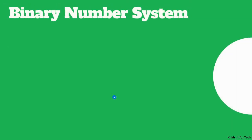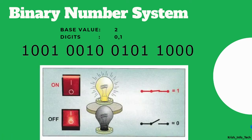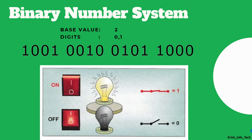Next is the binary number system. The base for binary is 2. Starting from 0: 0, 1 — we reach 2 numbers. So the digits are 0 and 1. Binary numbers look like 1, 0, 0, 1, 0, 0, 1, 0. If you take a light, for us it is on and off, but for a machine it is 0 and 1. You may have seen the symbol on power buttons — 0 means off, 1 means on. All types of machines — lights, fans, AC, washing machine, fridge, remote — use only the binary number system.